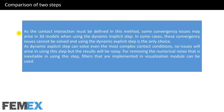Now I want to compare the dynamic explicit and dynamic implicit steps. As contact interaction must be defined in this method, some convergence issues may arise in 3D models when using the dynamic implicit step — in some cases these issues cannot be solved and using the dynamic explicit step is the only choice. The dynamic explicit step can solve even the most complex contact conditions with no convergence issues, but the results will be noisy. For removing the numerical noise, filters implemented in the visualization module can be used — the Butterworth filter is the best choice.